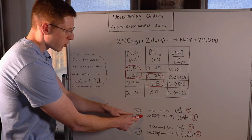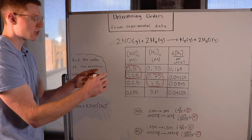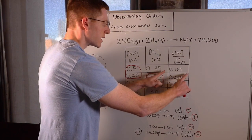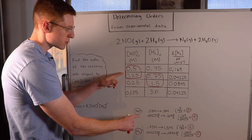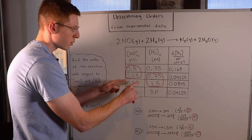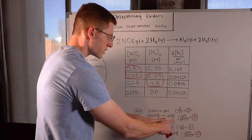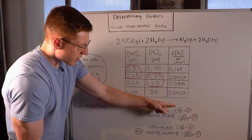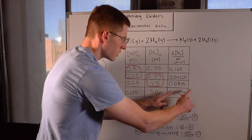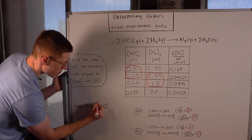When the initial concentration of NO doubled from 0.25 to 0.5 molar, the overall rate increased from 0.04225 molarity per second to 0.169 molarity per second — the rate went up by a factor of four. So when we double the initial concentration of NO, the rate quadruples, which means the order of the reaction with respect to NO is 2.